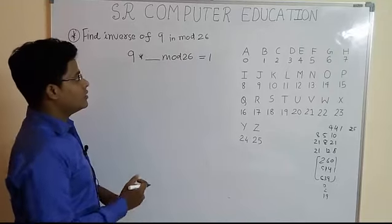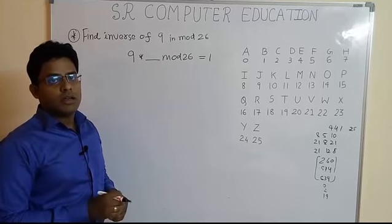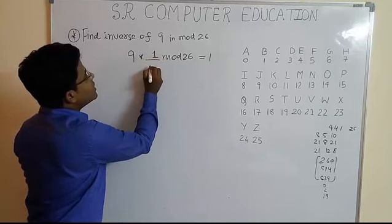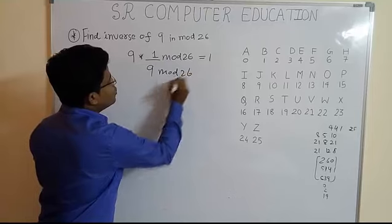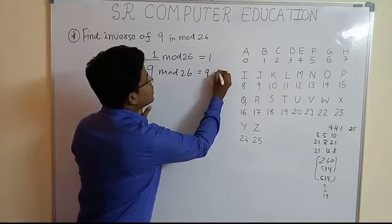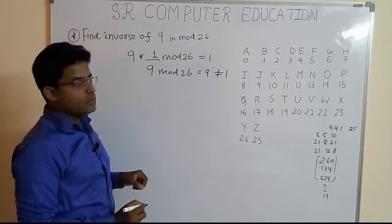Start with 1. You have to start with 1 and go up to 25. You will get that number in between. So, start with 1. 9 multiply by 1 that is 9 mod 26. You know 9 mod 26 is equal to 9 which is not equal to 1. So, 1 is not the inverse.